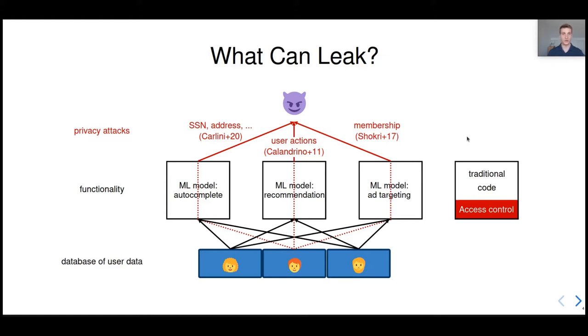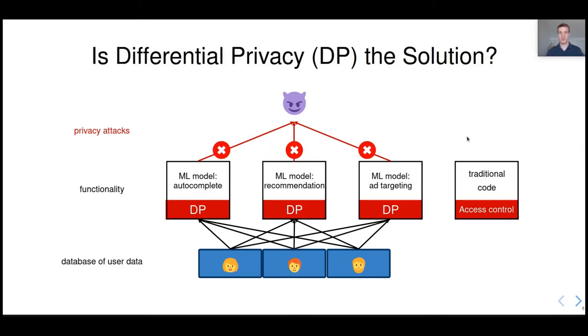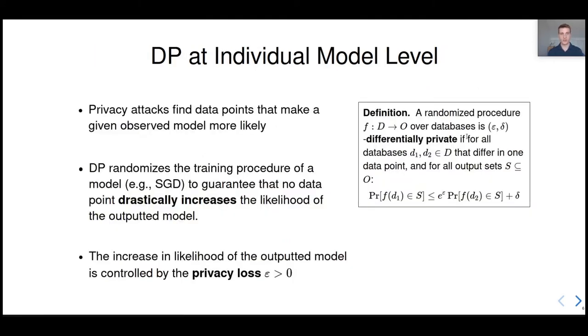One solution is differential privacy. So differential privacy can be used to prevent privacy attacks, but we should apply it at the right level. Let me explain that a bit more. The privacy attacks work by finding data points that make a given observed model or its predictions more likely. And differential privacy, or DP, can prevent these attacks by making sure that no single data point can drastically increase the likelihood of a given model. On the right is the formal definition of differential privacy, and you can see that it is a stability constraint for randomized computations. And the increase in likelihood of a given output is controlled by this parameter, epsilon, and it's called the privacy loss.